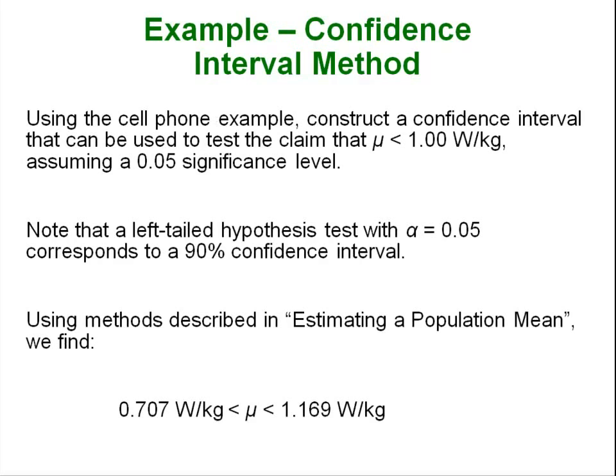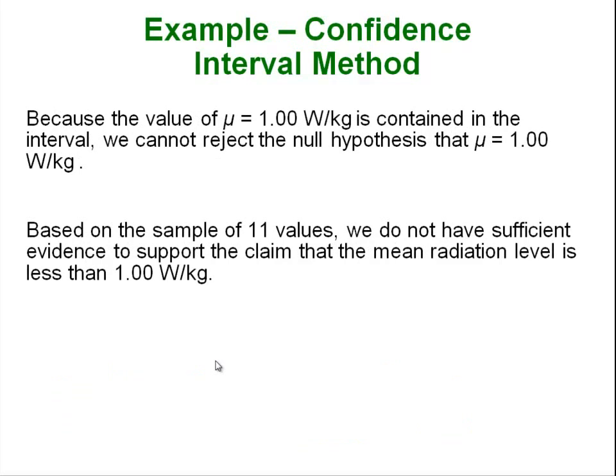In this case we got our sample mean if we went back and used the techniques that we learned in estimating a population mean we could create a confidence interval around it of basically 0.7 to 1.1. Because the value of 1.00 is within that confidence interval we fail to reject the claim that it is less than one. We would have to have an interval that was strictly less than one so it would have to go from 0.7 up to 0.999 type of idea. That's what this is saying. Because one is in the interval we fail to reject so we get that same result this time. I really wouldn't do the confidence interval method if I was you.